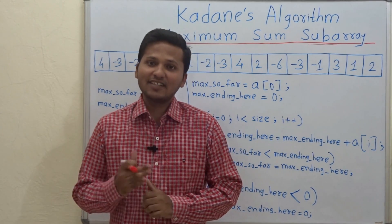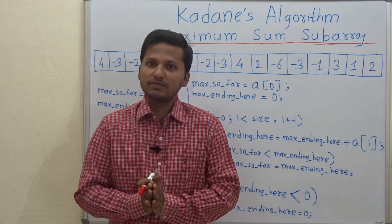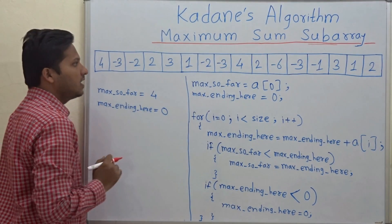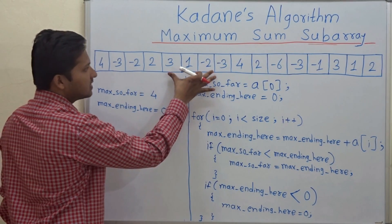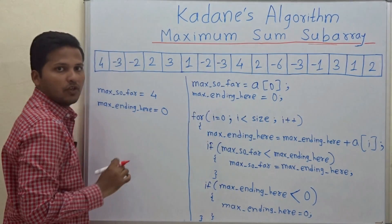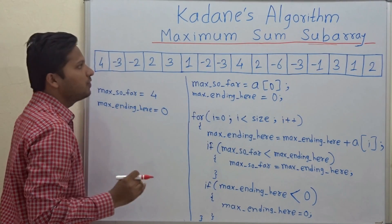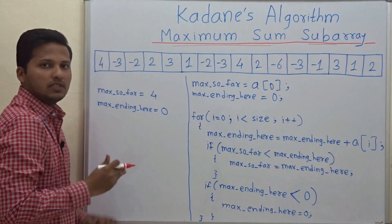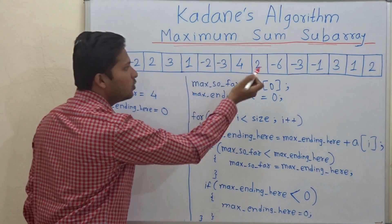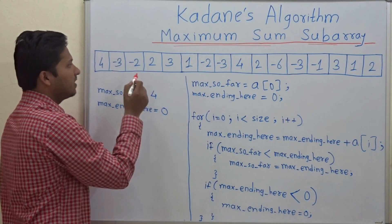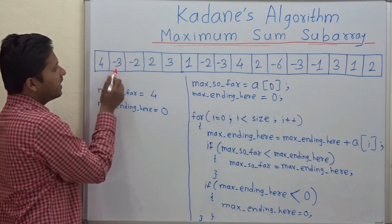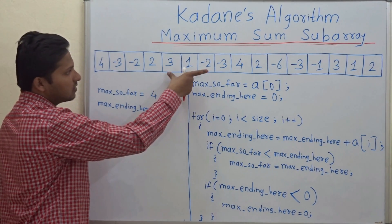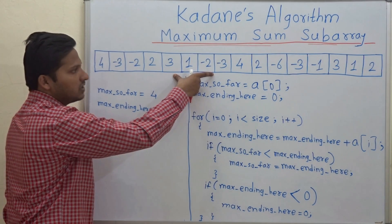Hello friends, today we are going to see Kadane's algorithm for finding out the maximum sum subarray. This is the array and in this array we have to find out the maximum sum for a set of continuous numbers, which is called the subarray. This problem exists because this array has some negative numbers, and whenever a negative number is encountered the sum reduces. So we have to find out the continuous set of numbers which has the maximum sum.